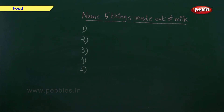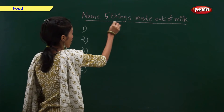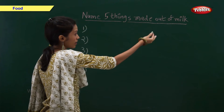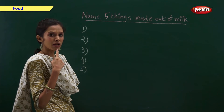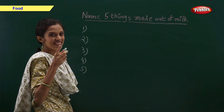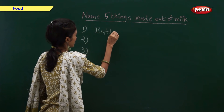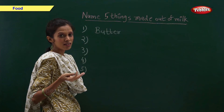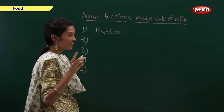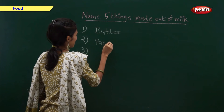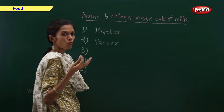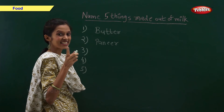Now you have to name five things made from milk. Can you tell me what is made out of milk? Yes — butter. What else is made out of milk? Yes — paneer. What else? Yes — ghee.